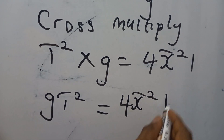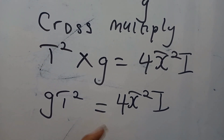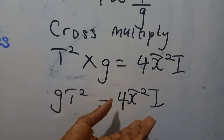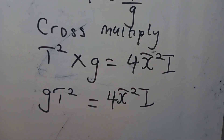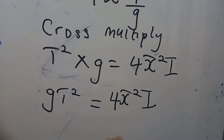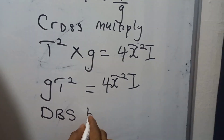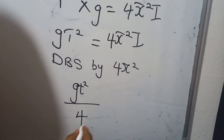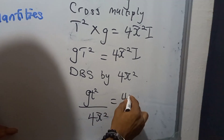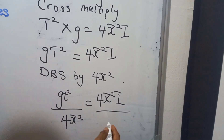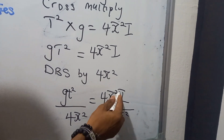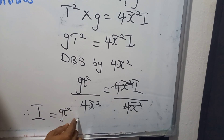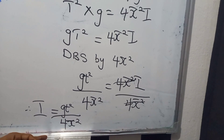So we have gt squared equals four pi squared i. Now you can see that to isolate i, we need to eliminate everything attached to i. What's attached to i is four pi squared, so we divide both sides by four pi squared: gt squared over four pi squared equals four pi squared i over four pi squared. The four pi squared cancels, so therefore i equals gt squared over four pi squared.